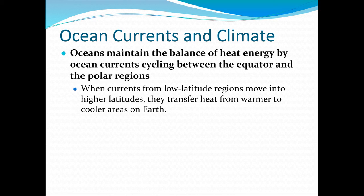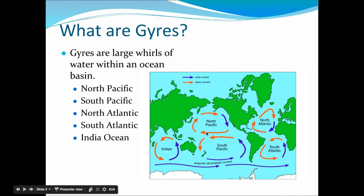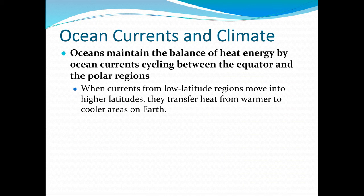Now we're on the back side of your note outline: ocean currents and their impact on climate. Why do we care so much about ocean currents? Because of how well they influence and moderate climate. They moderate it by cycling heat energy between the equator and the polar regions. Warm water goes from the equators to the poles, and cold water goes from the poles to the equators.